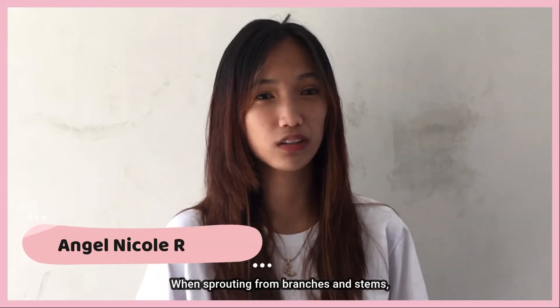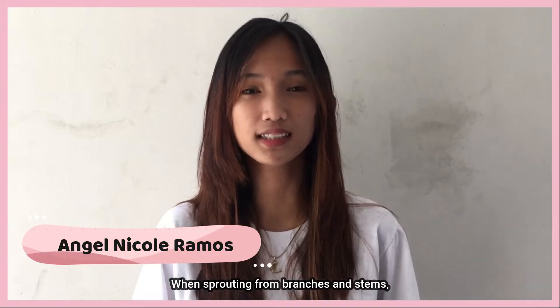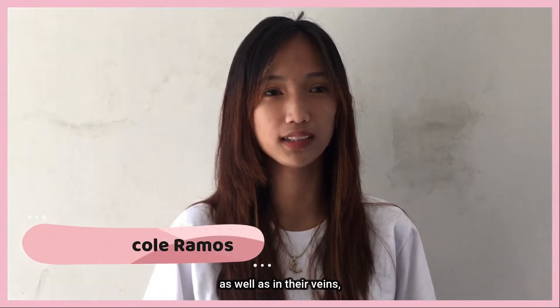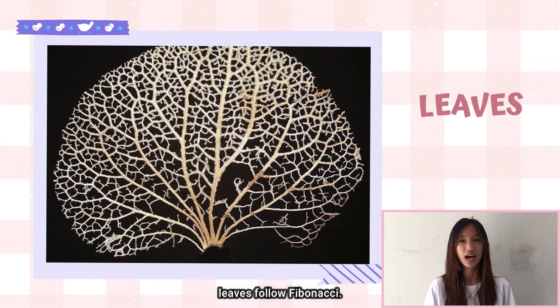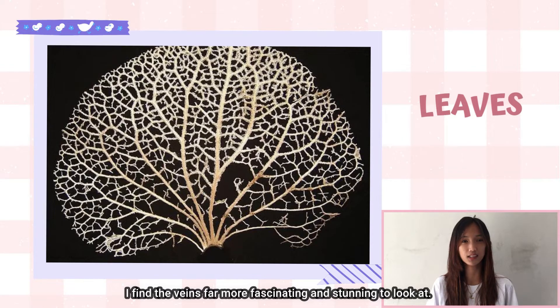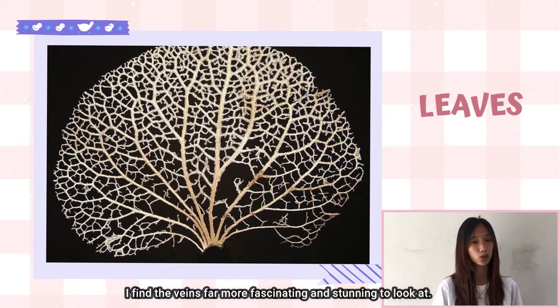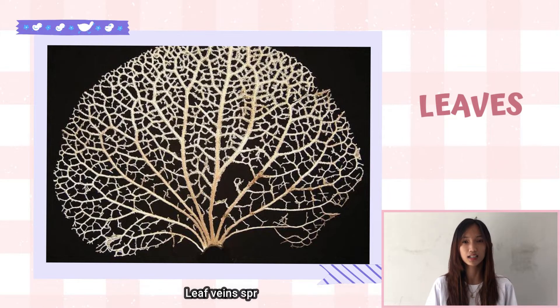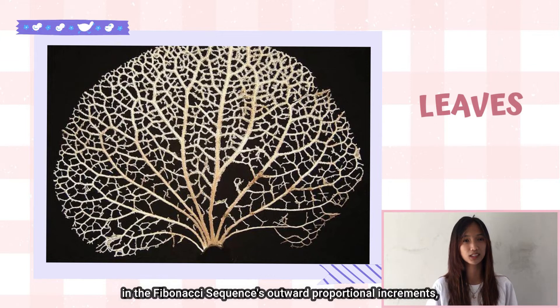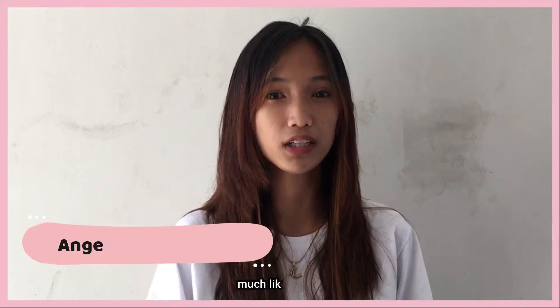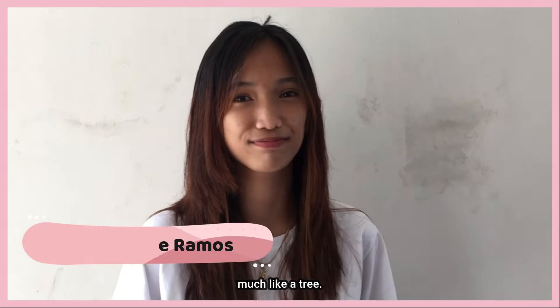The leaves. When sprouting from branches and stems, as well as in their veins, leaves follow Fibonacci. The veins are far more fascinating and stunning in their art. Leaf veins spread off more and more in Fibonacci sequence outward proportion increments, much like a tree.